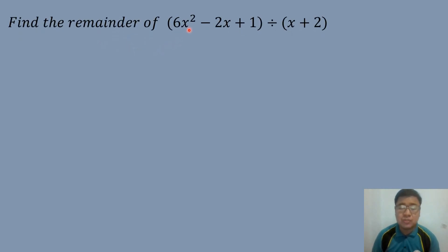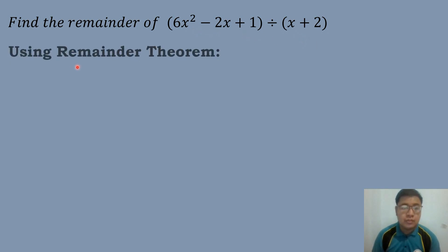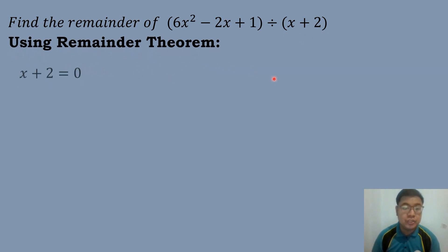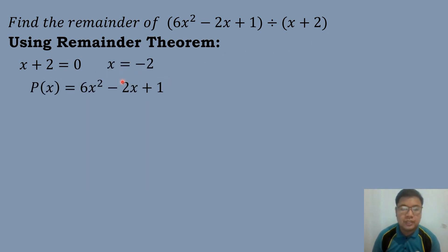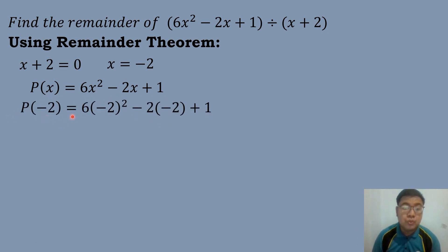Let's have our first example. Find the remainder of 6X squared minus 2X plus 1 divided by X plus 2. The first step is we need to use the Remainder Theorem. So let us get the value of our divisor, which is X plus 2, and let us equate it to 0. So we have X plus 2 equals 0, then X will be equal to negative 2. And then we will substitute the value of X, which is negative 2, into our dividend.